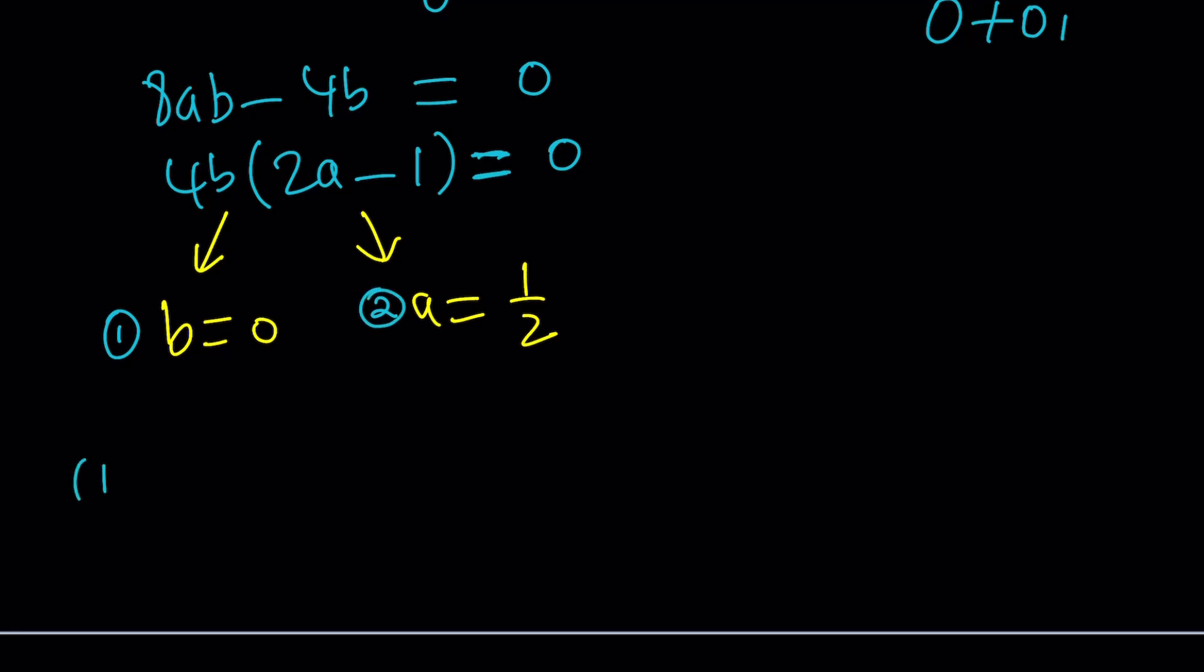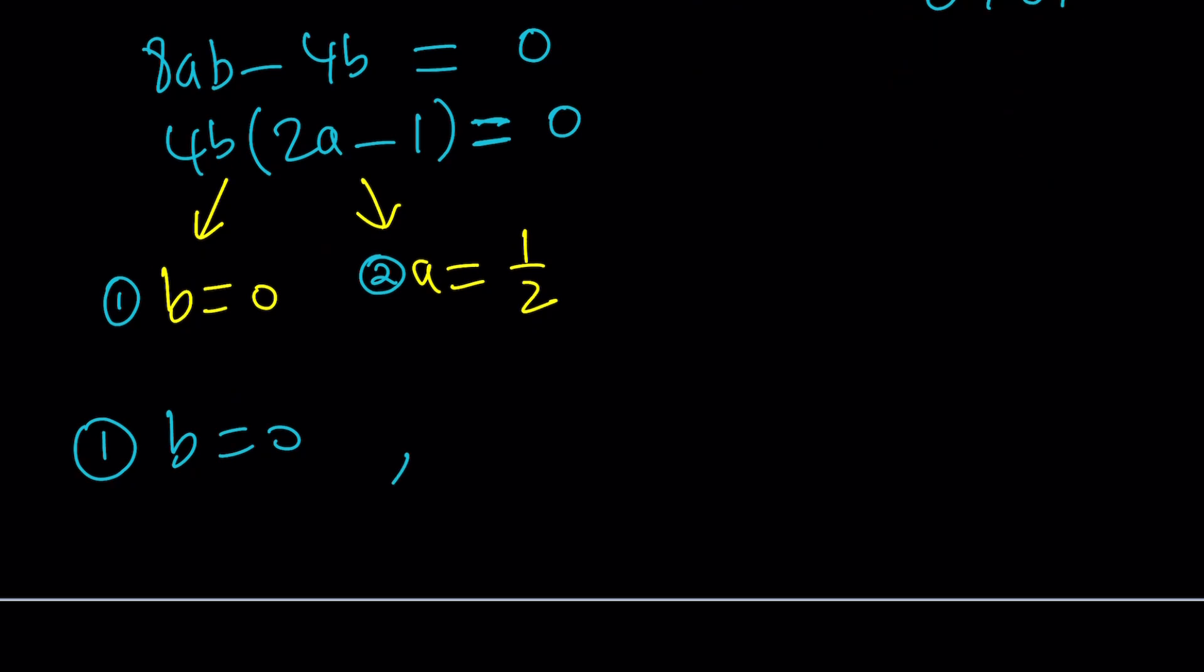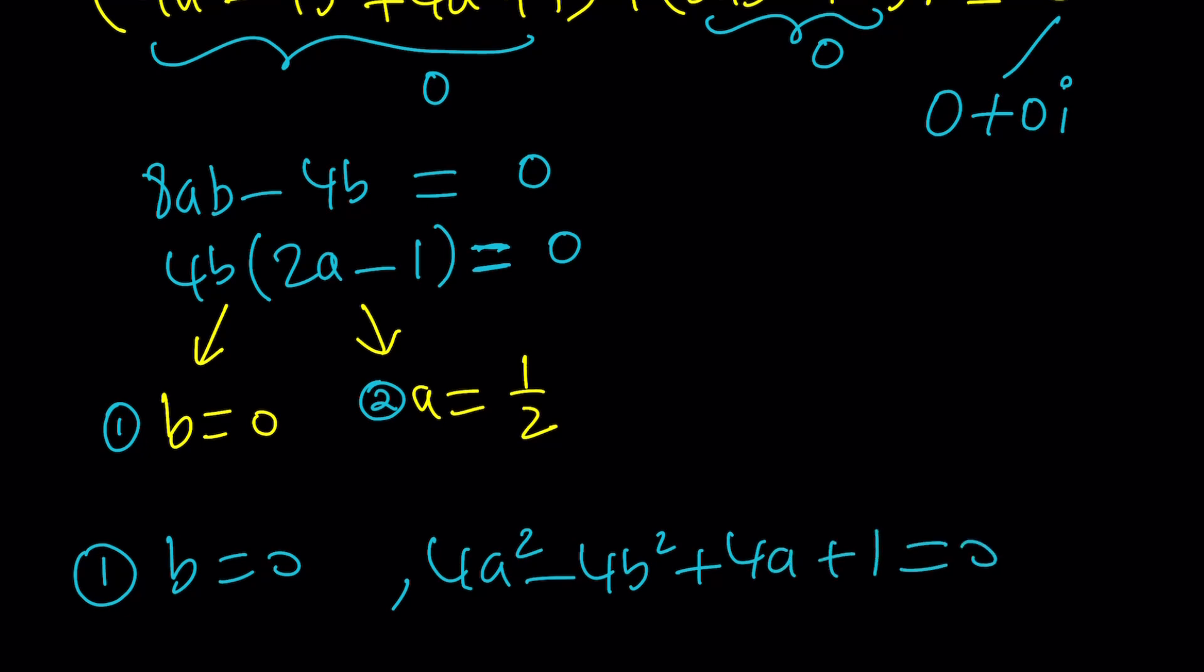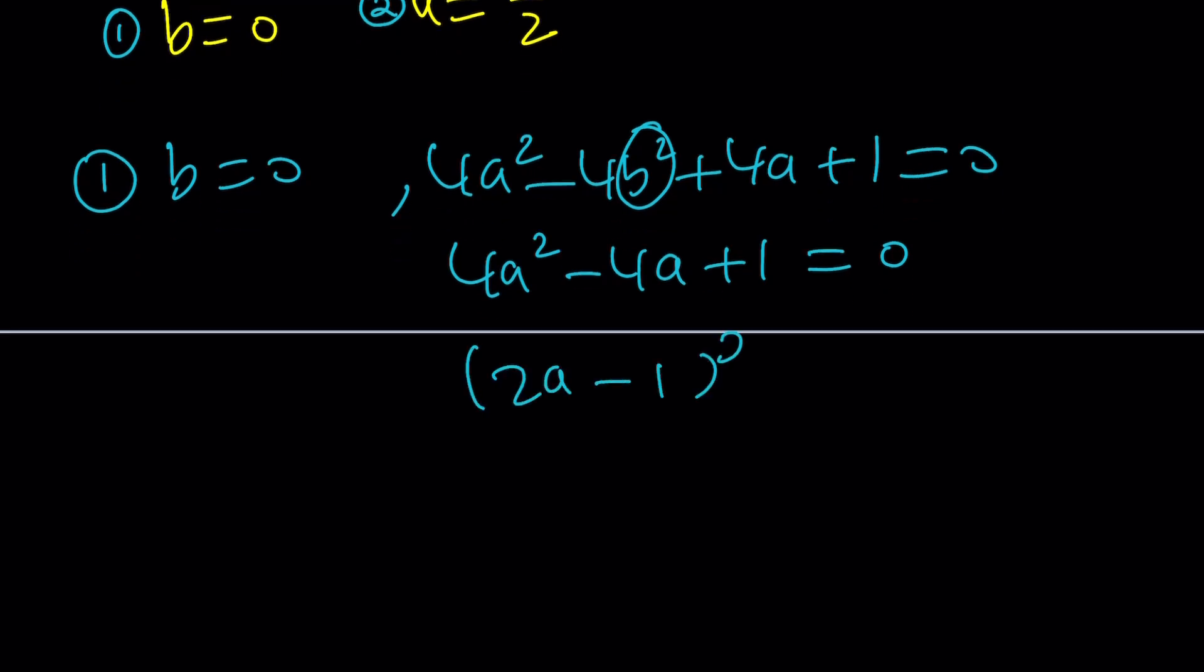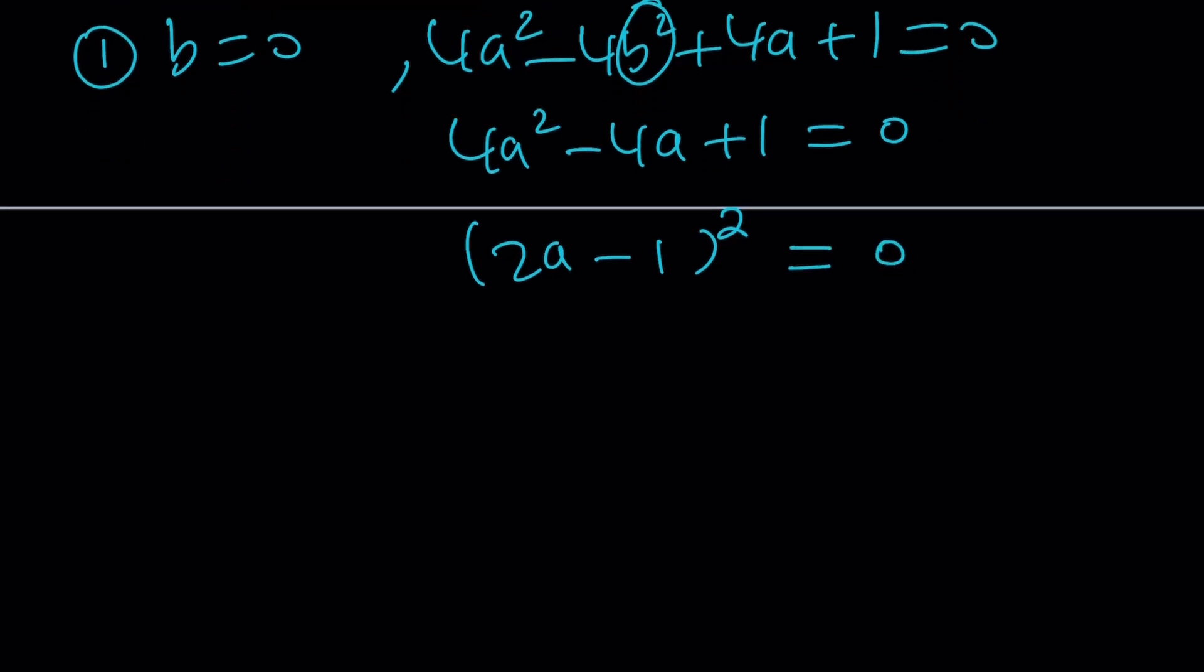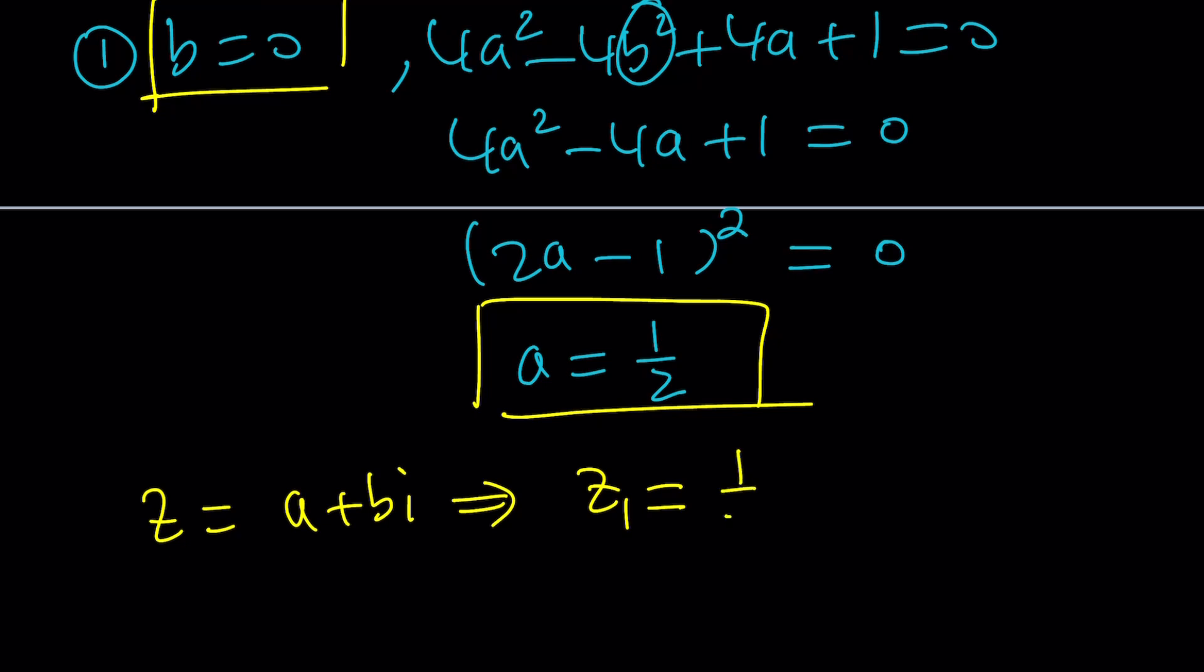So there are two possibilities we have to look at both. Let's call this first case and the second case. First case: b = 0. Now we have another equation: 4a² - 4b² + 4a + 1 = 0. We know that b = 0, so that's going to simplify things a great deal. We can now replace b with 0, and that gives us 4a² + 4a + 1 = 0. Wait a minute, isn't this the stuff we just talked about at the beginning?